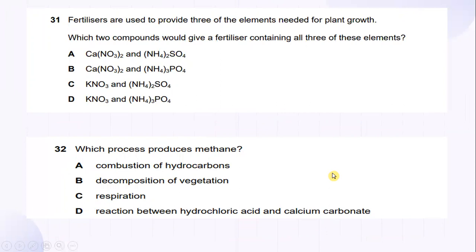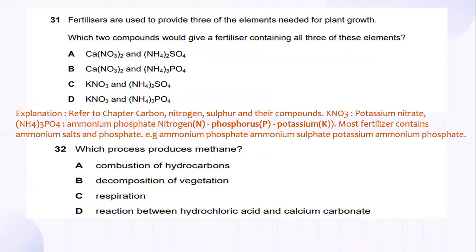Fertilizers are used to provide three of the elements needed for the plant. Which two compounds would give a fertilizer containing all three of these elements? So, refer to the chapter carbon, nitrogen, sulfur and their compounds. Where KNO3 is referring to potassium nitrate. And (NH4)3PO4 is referring to ammonium phosphate, nitrogen, phosphorus and potassium. And most fertilizers contain ammonium salt and phosphate.